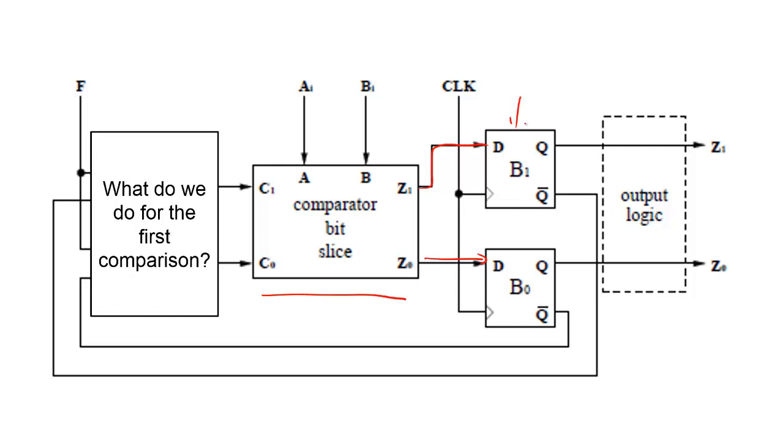So these guys are storing our current state. And then the D input, input D, is our Q+, that's our next state. And so the only question now that we have to figure out is, what do we do for that first comparison? How do we reset the counter into our start state?